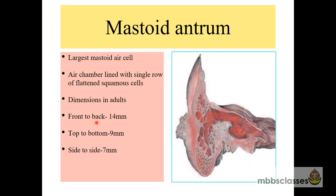Coming into the dimensions: from front to back it measures 14 mm, top to bottom it measures around 9 mm, and side to side 7 mm. Looking at this picture of the temporal bone, this is the tympanic cavity. This opening which connects the tympanic cavity with the mastoid antrum is the aditus ad antrum.